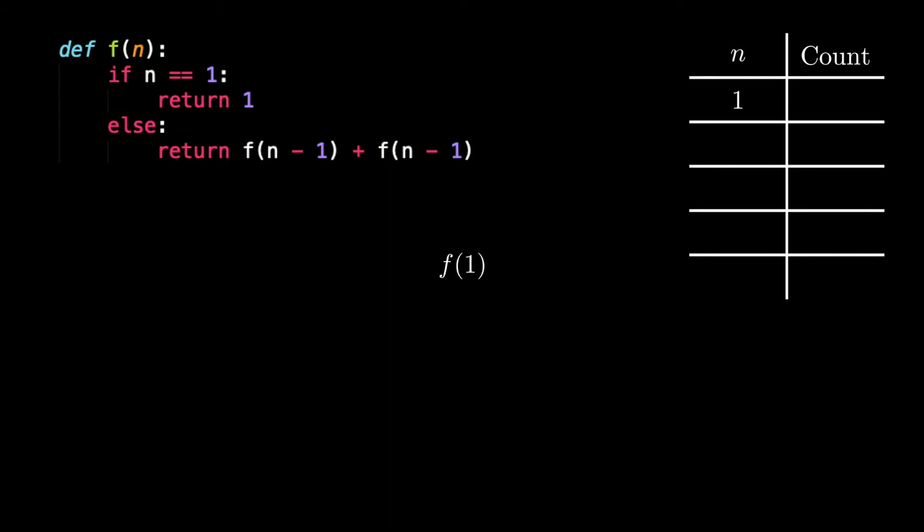For n equals 1, we have exactly one call to the function f on the input 1. For n equals 2, we have a call to f of 2 which then calls f of 1 and adds it to another f of 1 call. This leads to a total of three calls.